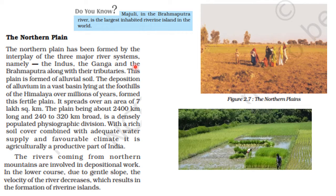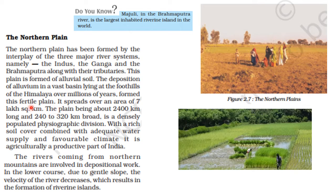The Northern Plains have been formed by the interplay of three major river systems — the Indus, the Ganga, and the Brahmaputra — along with their tributaries. Each plain is formed of alluvial soil. Alluvium refers to the fine particles carried by the rivers. This plain is formed by the deposition of alluvium in a vast basin lying at the foothills of the Himalayas over millions of years, forming these fertile plains.